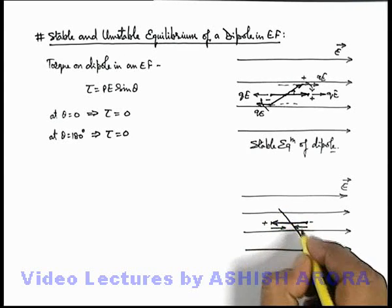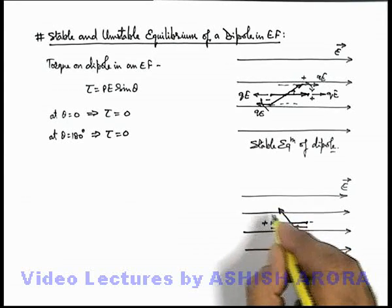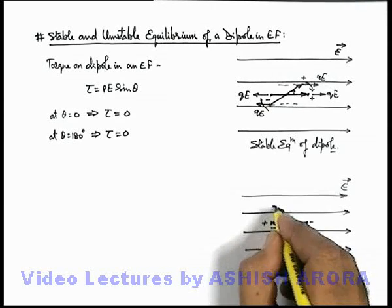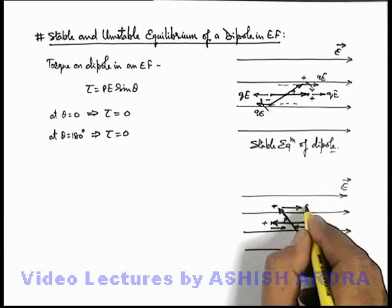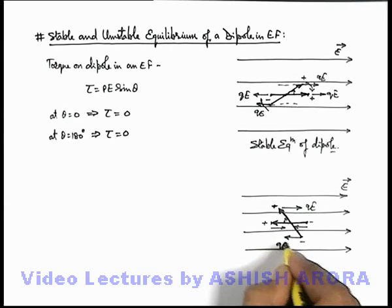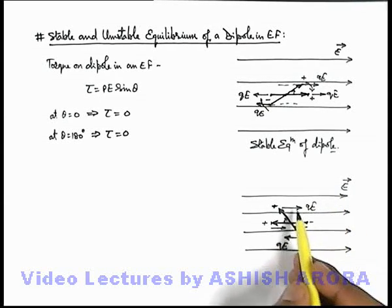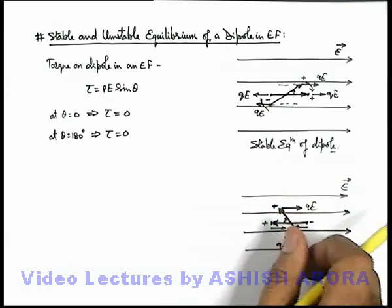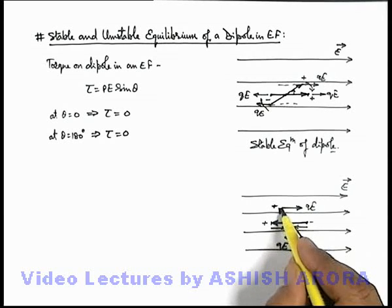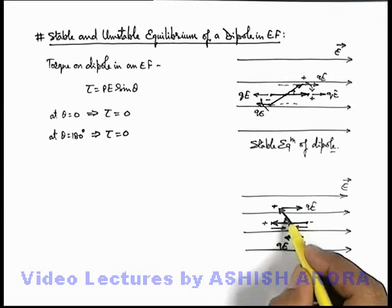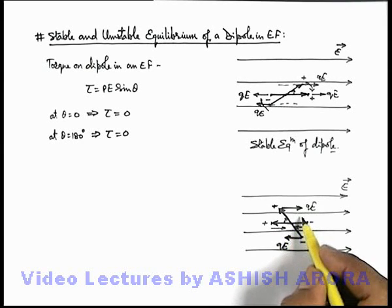Now see what happens if we rotate the dipole in a clockwise fashion by an angle θ. The positive end will experience a force in the direction of the electric field, qE, and the negative end will experience a force qE in the direction opposite to the electric field. Due to these two equal and opposite forces, a couple acts again — but this time in the clockwise manner. That means if we displace the dipole by a small angular displacement, a torque is also exerted on the dipole to rotate it in the same direction.